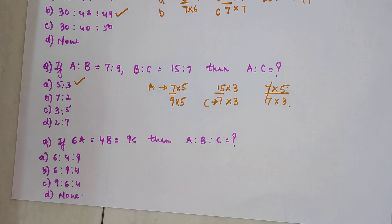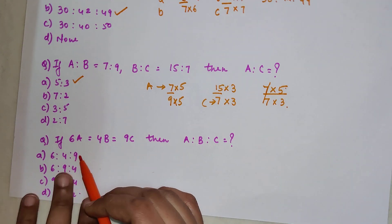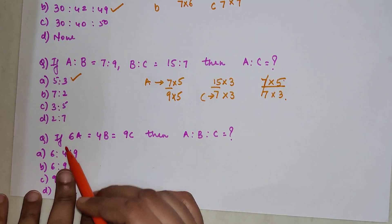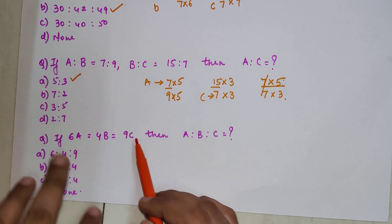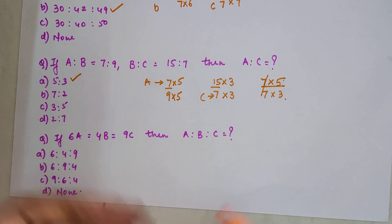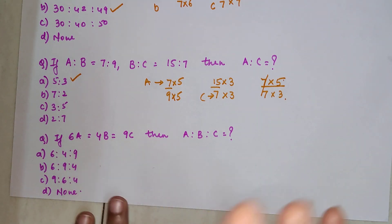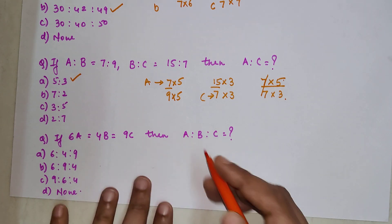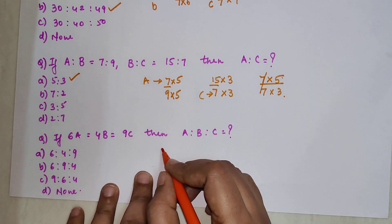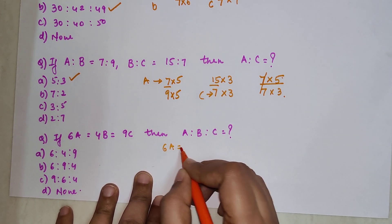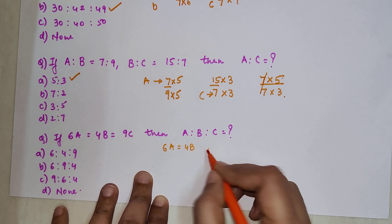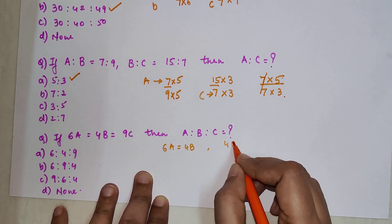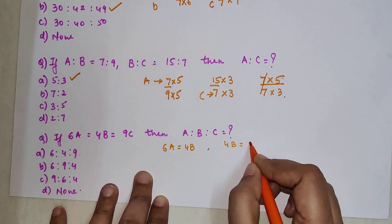Now this next one is also a bit different. If 6A is equal to 4B is equal to 9C, we need to find A is to B is to C. First, we write 6A = 4B on one side and 4B = 9C on the other side.